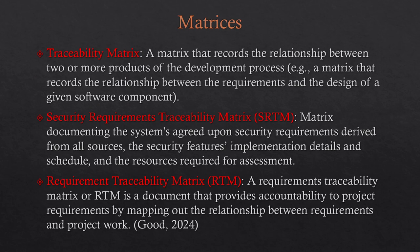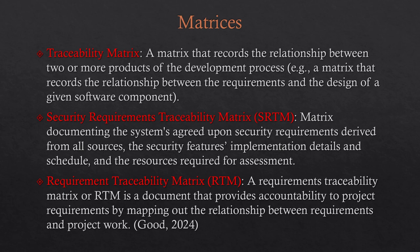There are a variety of different matrices. A traceability matrix from NIST SP 800-160 Volume 1 records relationships between two or more products. You may also be familiar with a security requirements traceability matrix or security control traceability matrix. There's also a requirements traceability matrix from project management, which gets more into project work. Really, what we're getting down to is that there's a variety of matrix types — it's just a mapping and showing of relationships.